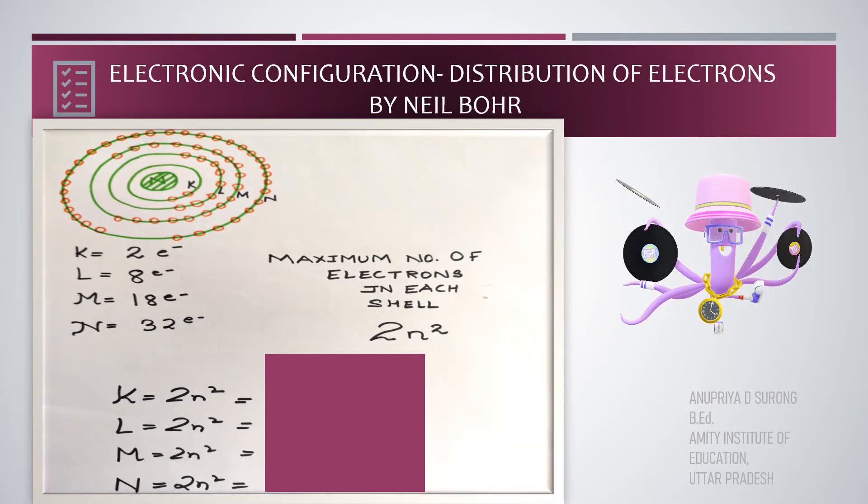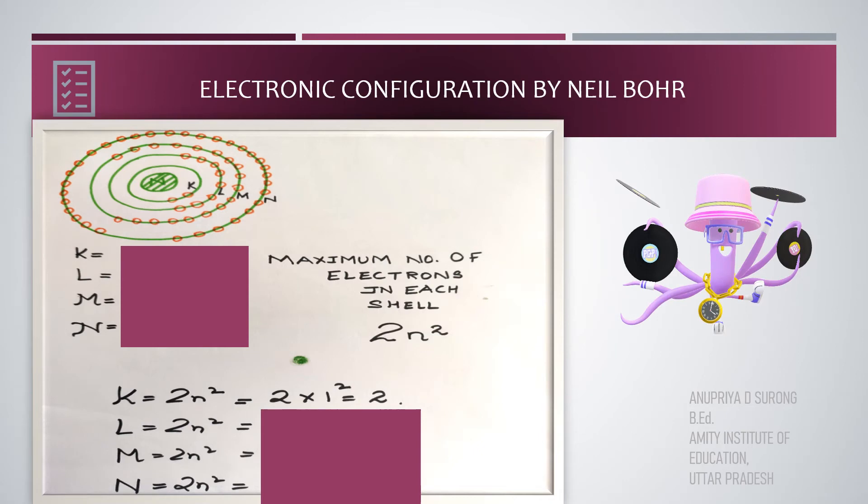Alright, can you see these orange dots around the nucleus? They are nothing but electrons distributed in the shells. For instance, K has a capacity of 2 electrons, L has a capacity of 8 electrons, M has a capacity of 18 electrons, and N has a capacity of 32 electrons, depending upon the atomic size of an atom. How do we know about the capacity of electrons in each shell? Well, there is a formula for determining the maximum number of electrons in each shell, that is, 2N squared.